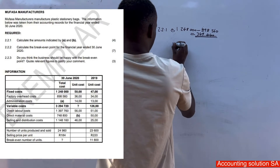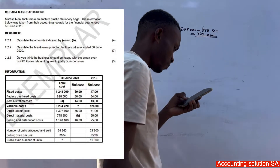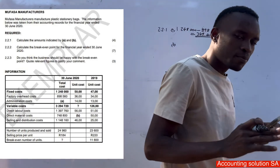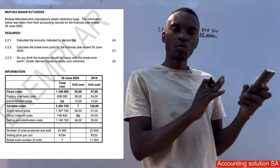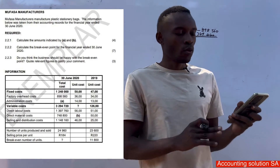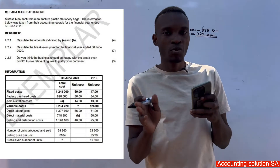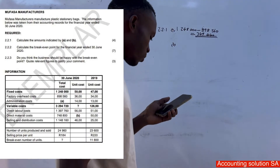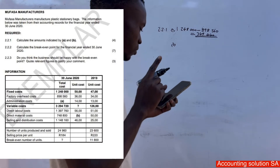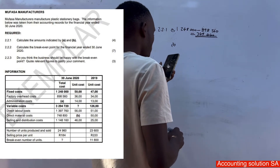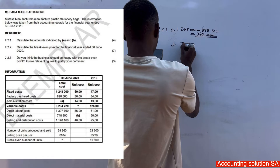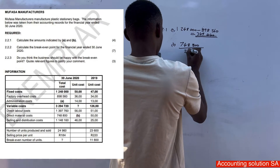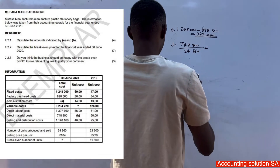For B, we are looking for the unit cost of direct material under variable costs. Every time you calculate variable cost per unit, focus on how many units were produced and sold. If sold and produced are not equal, take only units produced. In 2020 we produced 24,960 units, so we take the total direct material cost of R748,800 and divide by 24,960 units produced, which gives us R30 per unit.